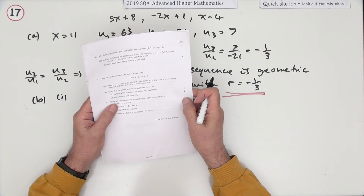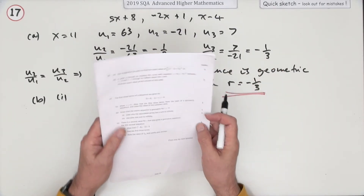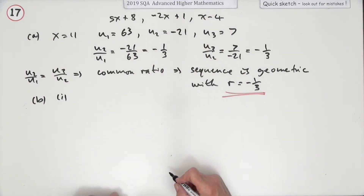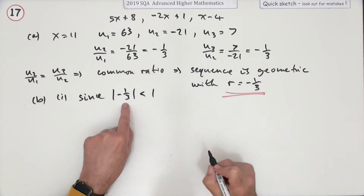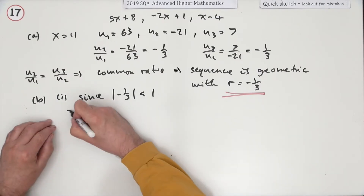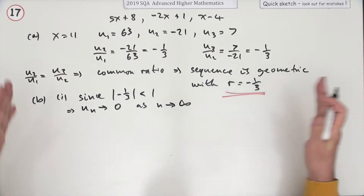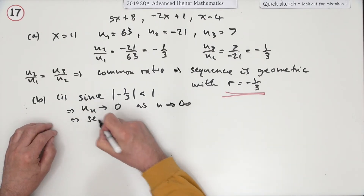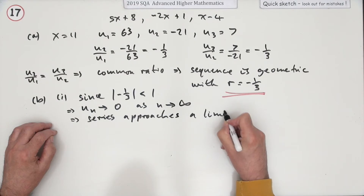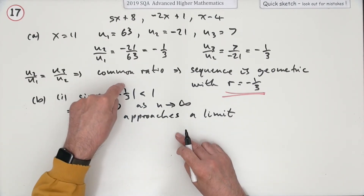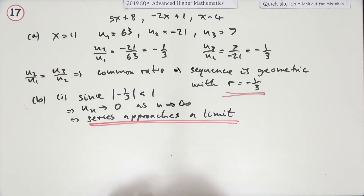Part B: given that the entire sequence is geometric, state why the associated series — that's when you add the terms together — has a sum to infinity. Since negative one third is a proper fraction, its absolute value is less than one, meaning it lies between negative one and one. That means uₙ tends to zero as n tends to infinity, because the terms get smaller and smaller, so the series approaches a limit.